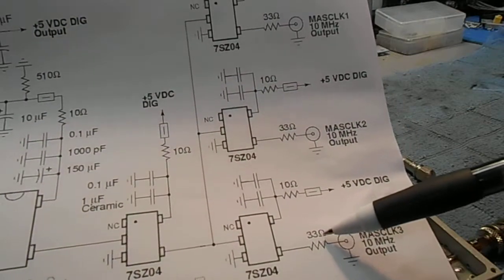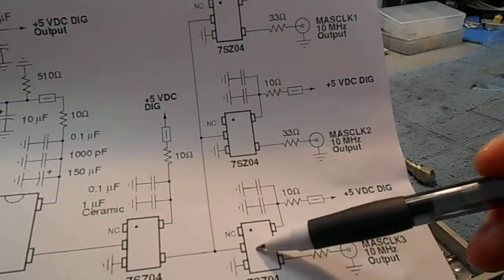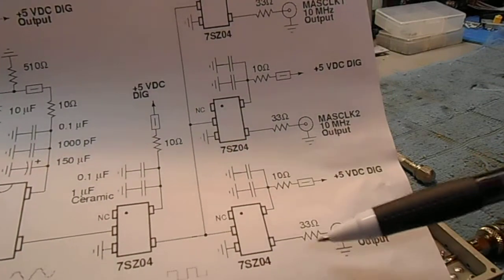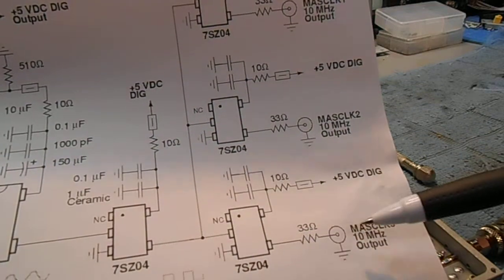By adding series 33 ohm resistors, combined with the internal resistance, which is around 17 ohms, we can turn our inverters into essentially 50 ohm sources.